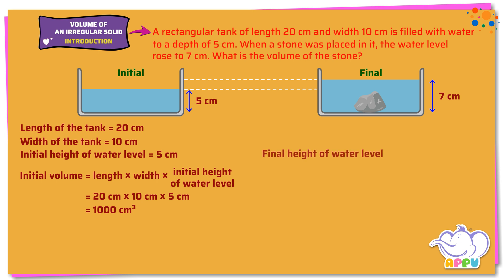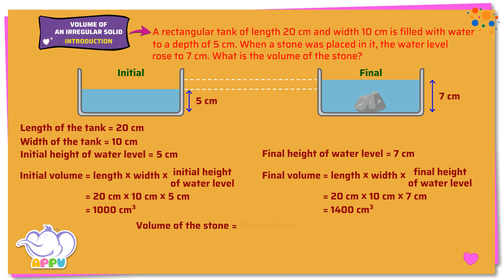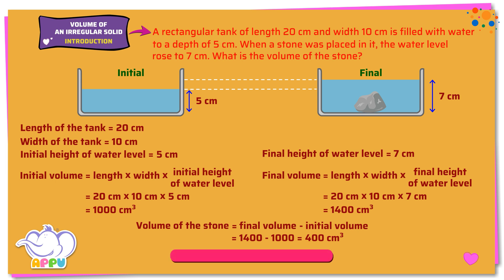Final height of water level equals 7 centimeters. Final volume equals length times width times final height of water level: 20 centimeters times 10 centimeters times 7 centimeters equals 1,400 cubic centimeters. Volume of the stone equals final volume minus initial volume: 1,400 minus 1,000 equals 400 cubic centimeters. So the volume of the stone is 400 cubic centimeters.